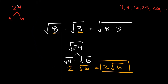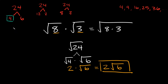One thing I want to point out: when I was breaking down 24, I could have broken it down in other ways — like 12 and 2, or 8 times 3. But I specifically chose 4 and 6 because 4 is a perfect square, and when I take the square root of it, it turns into a regular whole number — 2. So if you have the chance to pick a perfect square as one of your factors when you're breaking it up like this, definitely do that. It's going to make your life a lot easier.